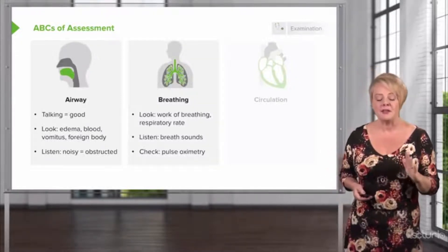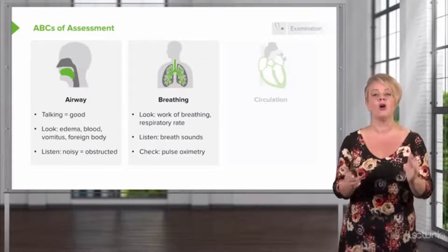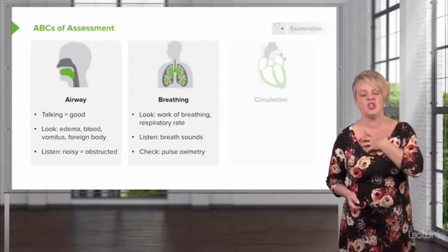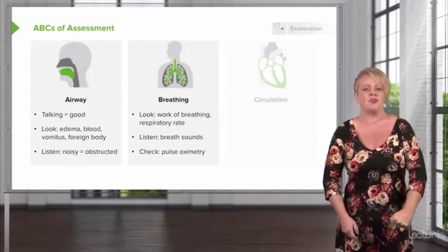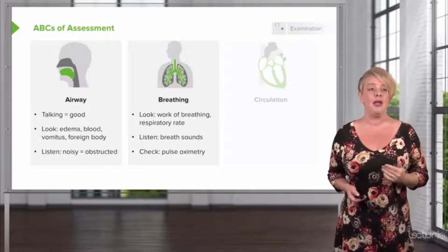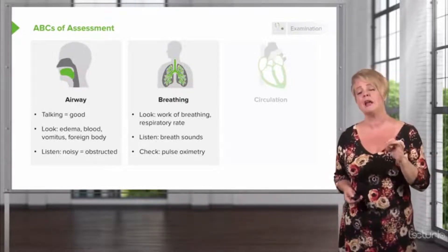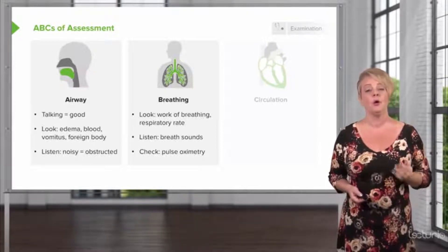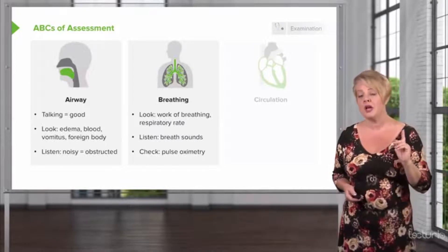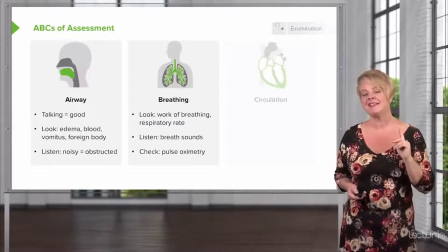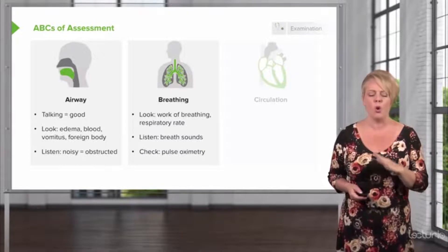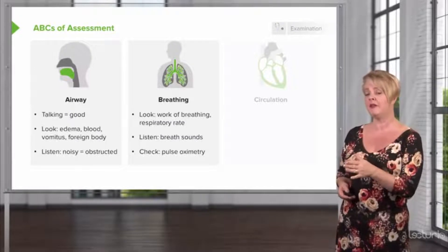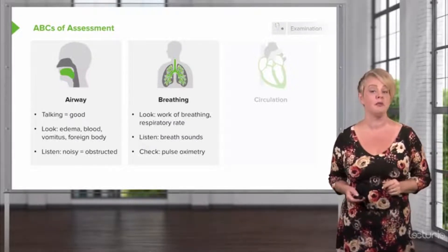Regarding breathing, the best thing we can do is get a gestalt sense of how hard the patient is working to breathe. If the patient is using the muscles in their neck and chest, and doing push-ups when they try to breathe, those are signs of potentially impending respiratory failure, because they won't be able to maintain that high level of work of breathing indefinitely. We want to listen to their breath sounds and check their pulse ox — the pulse ox is the single most important vital sign for breathing. The whole purpose of the lungs is to get oxygen into the bloodstream, and even if the patient looks and sounds great, if they're hypoxic, you've got a problem with B.